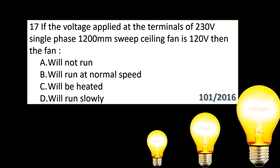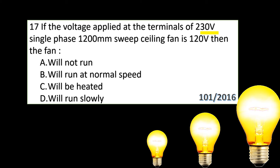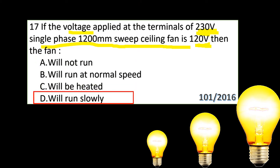If the voltage applied at the terminals of a 230-volt single-phase 1200 mm sweep ceiling fan is increased to 240 volts, the fan will run slowly.